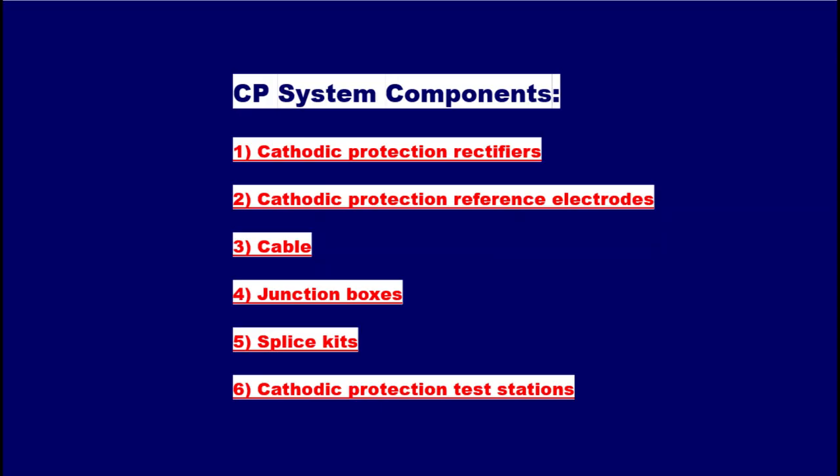CP System Components, broadly called Cathodic Protection System Components, include 6 categories: 1. Cathodic Protection Rectifiers, 2. Cathodic Protection Reference Electrodes, 3. Cables, 4. Junction Boxes, 5. Supply Skids, 6. Cathodic Protection Test Stations.